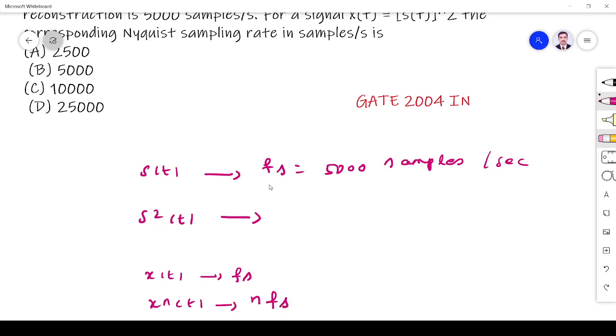So for s²(t), since s(t) is having a sampling rate of 5,000, s²(t) should have a sampling rate of 2 times 5,000, which is 10,000 samples per second.